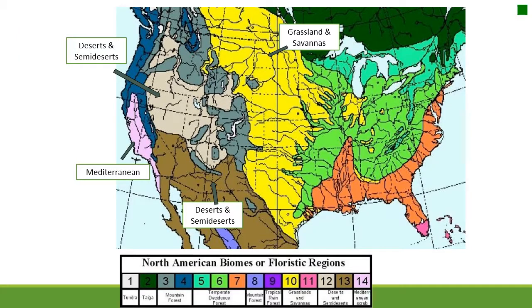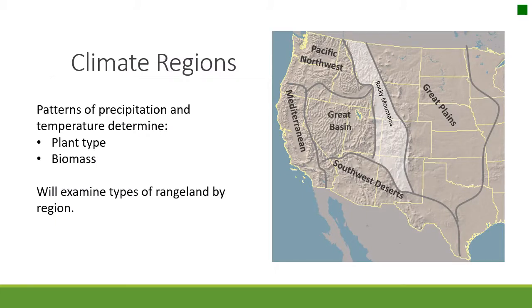Remember that we're looking at these range regions according to major biomes in the U.S. We're going to be in that middle central area, mostly in that grassland savanna, and then we'll move down to that dark brown area at the bottom of the screen here — the deserts and semi-deserts. The reason we look at these regions by climate is because the climate patterns determine the kind of plants out there in the biomass. Today we are going to be in the Great Plains — we'll talk about that climate and the southwest desert climate.